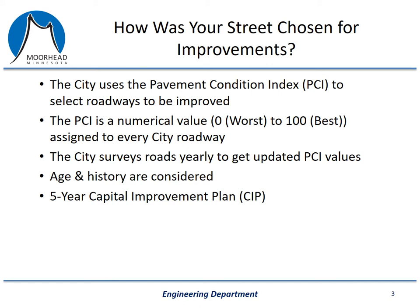We also take into consideration the age of the street and how it was constructed. For our street projects, we look five years ahead. Right now, if you go to the city's website, you can view our five-year CIP plan and see all the street improvement projects we are proposing to do. So we use our pavement management software, the age and history of the road, and our proposed budget for each year, and we develop a five-year plan. It tells us which streets we should do and how to get the most out of our tax dollars.